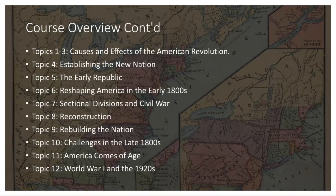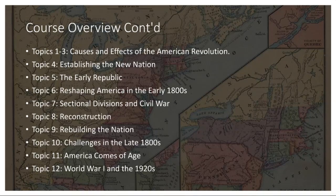The newfound independence in Topic 2 presented the challenge of creating a stable government. The Articles of Confederation initially served as a framework, but they proved ineffective in governing the nation. This led to the Constitutional Convention of 1787, where the U.S. Constitution was drafted. This document established a federal system balancing powers between the national and state governments and incorporating checks and balances to prevent the concentration of power.